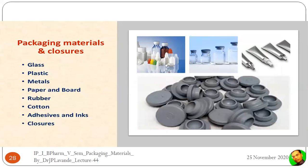After containers, we move to packaging materials and the closure system. The different materials used for packaging include glass, plastic, metal, paperboards, rubber, cotton, adhesive inks, and closures. Glass containers, plastics, and metals are most commonly used as primary packaging materials. Rubber also forms part of primary packaging, while cotton, adhesive inks, and paperboard form part of the secondary and tertiary packaging materials.